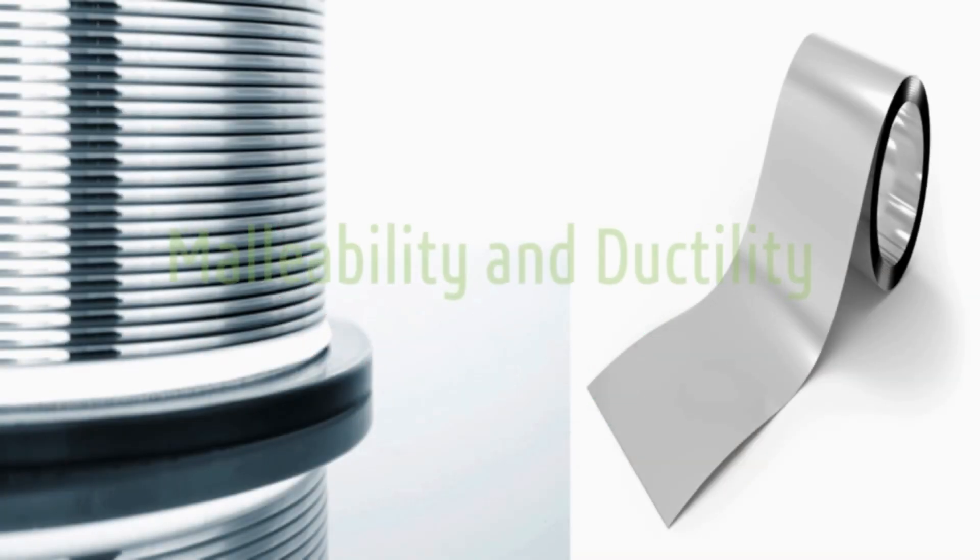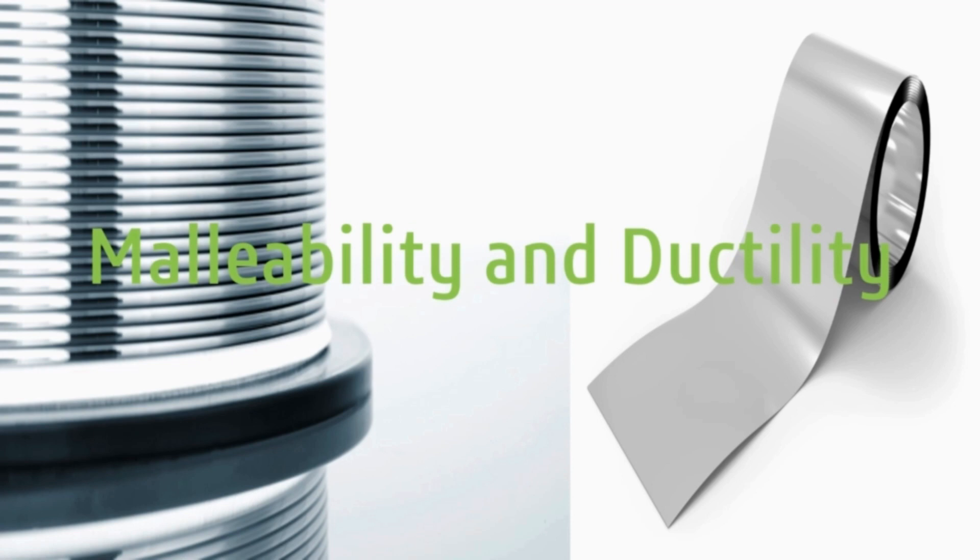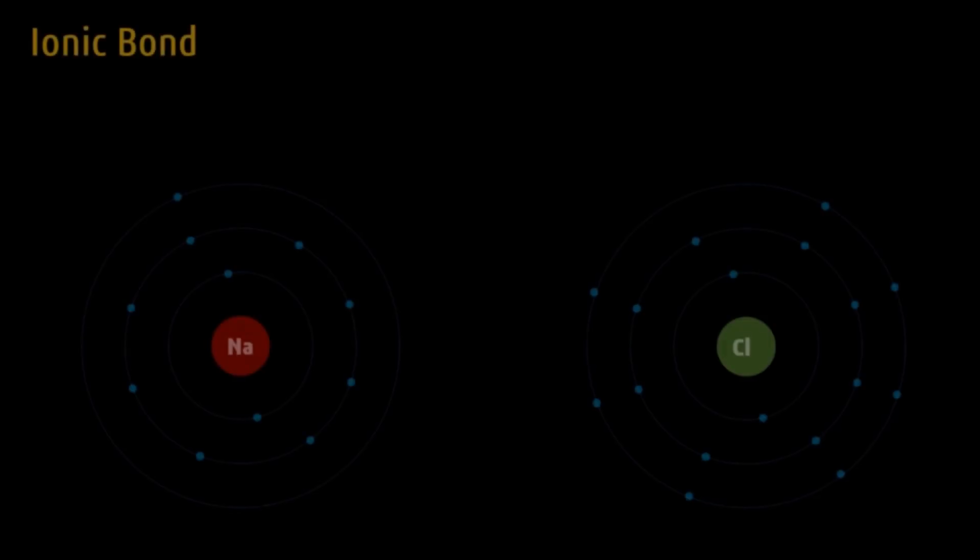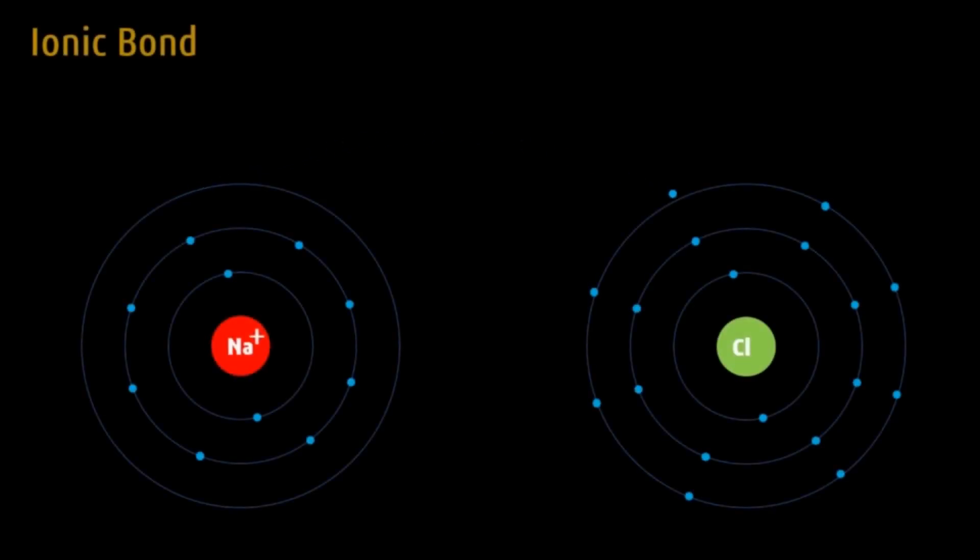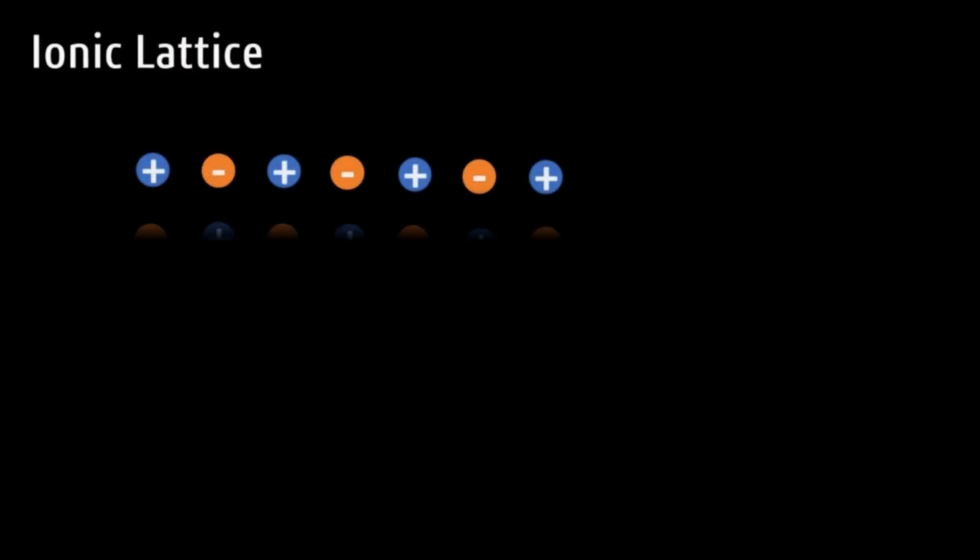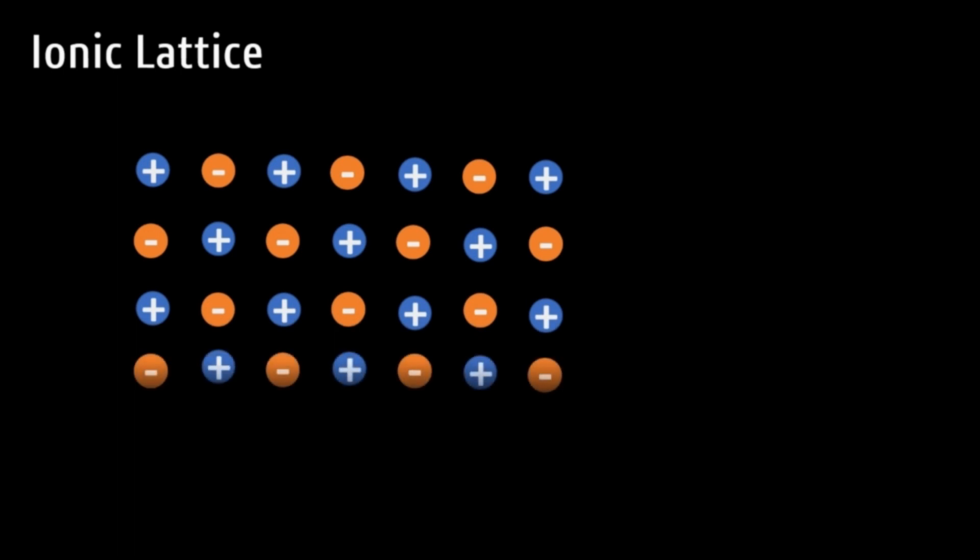Malleability and ductility: Unlike ionic crystals, metals are malleable and ductile. Now have a look at the case of ionic crystal. Cations are generated by losing one or more electrons and anions are generated by accepting one or more electrons. Then the electrostatic forces of attraction between the cations and anions leads to the ionic crystal.